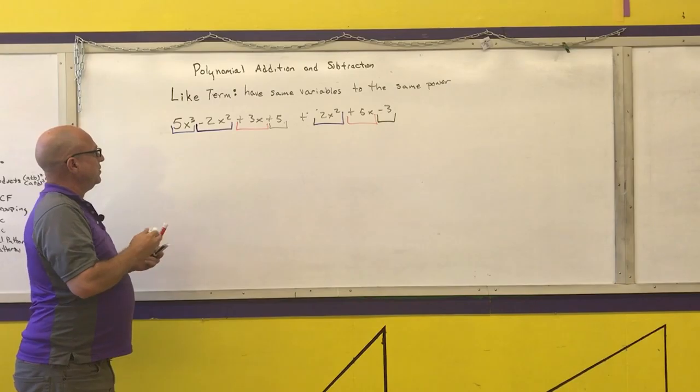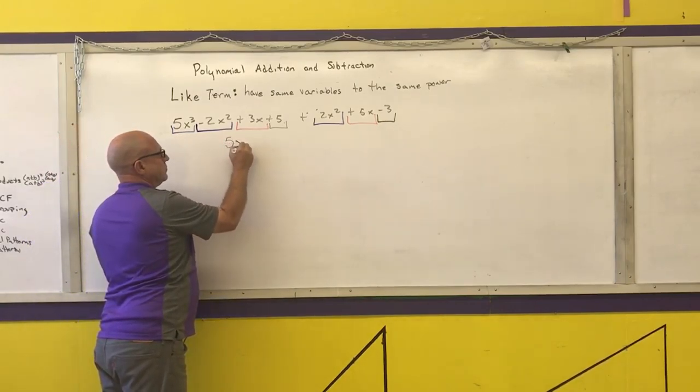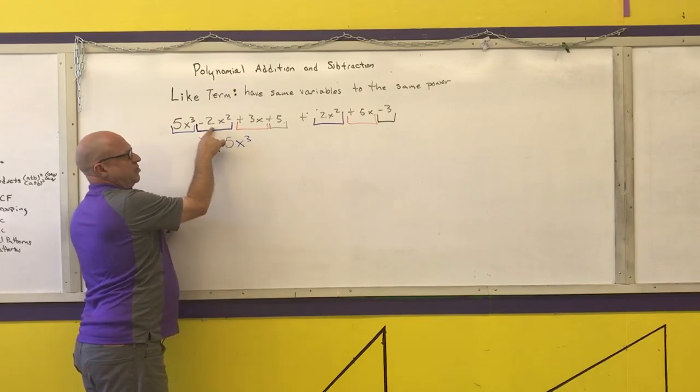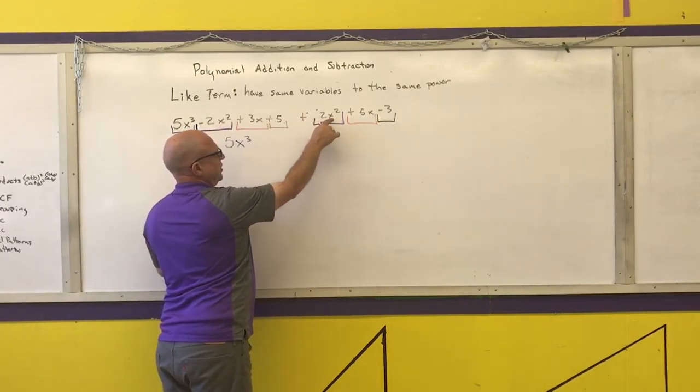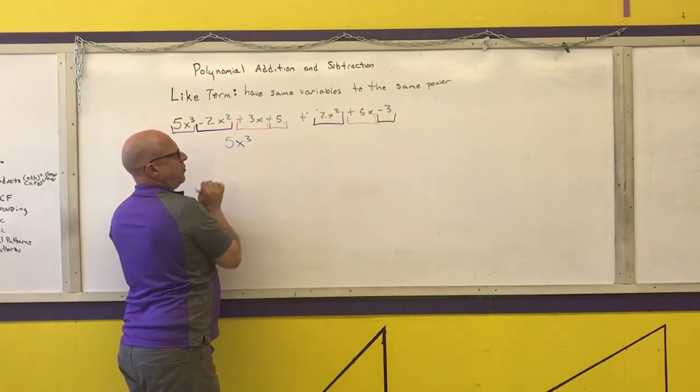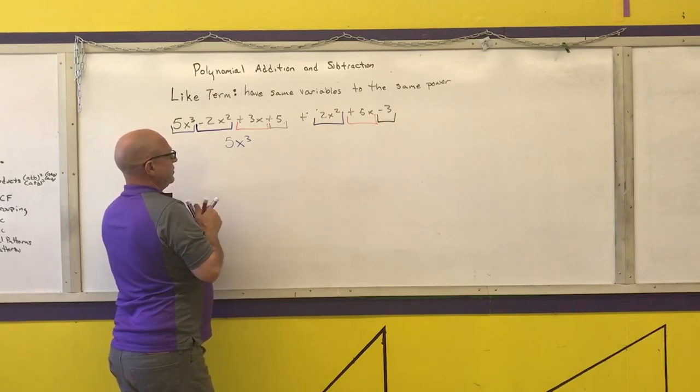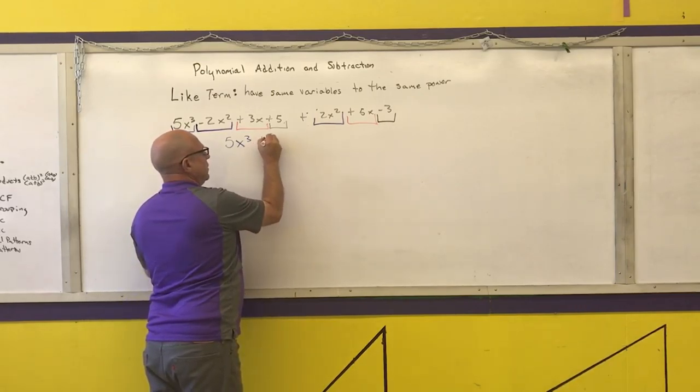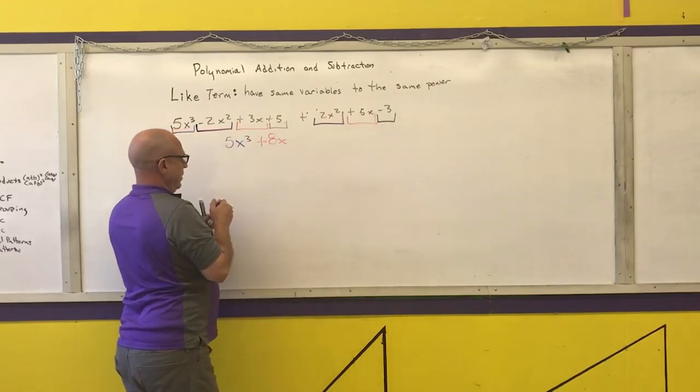So my final answer is going to be the 5x cubes. Negative two x squared plus two x squared, negative two plus two is zero, so I'm not even going to write a purple term here. Three x plus five x is eight x, and five minus three is two.